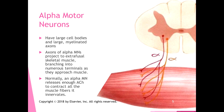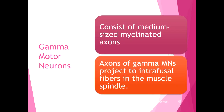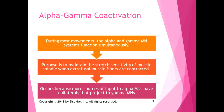Extrafusal fibers are on the outside of the muscle belly. On the inside we have fibers innervated by gamma motor neurons, which have medium-sized myelinated axons and project to intrafusal fibers inside the muscle spindle. Alpha and gamma motor neurons work together to monitor muscle length. During most movements, the alpha and gamma motor neurons function simultaneously to maintain the stretch sensitivity of the muscle spindle when the extrafusal muscles are contracted.